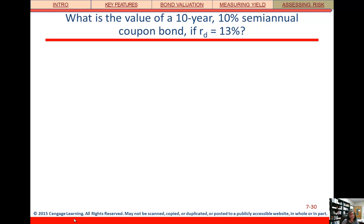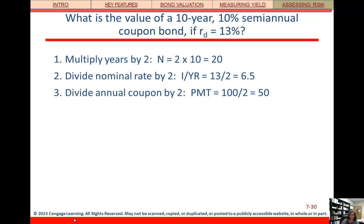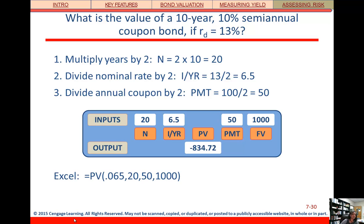Here's an example: a 10-year, 10% semi-annual coupon bond with a yield of 13% — what's the price? Assuming a $1,000 face value: N = 10 × 2 = 20; I = 13 ÷ 2 = 6.5; PMT = 100 ÷ 2 = 50; FV = 1,000. Computing the present value gives us $834.72. We knew this would be a discount bond because interest rates went up from 10% to 13%, so the price had to go down.